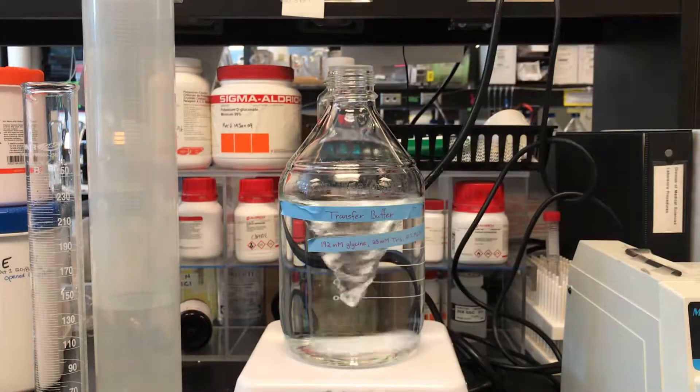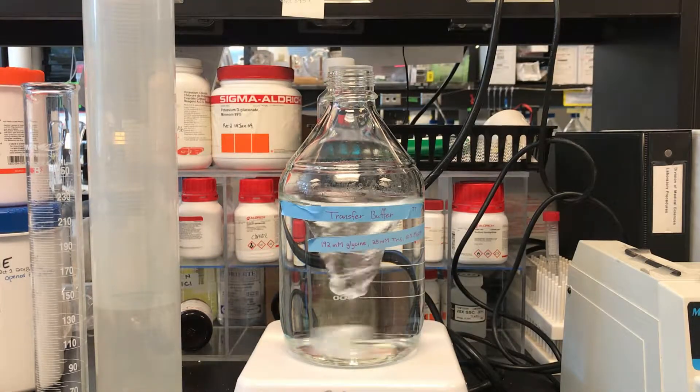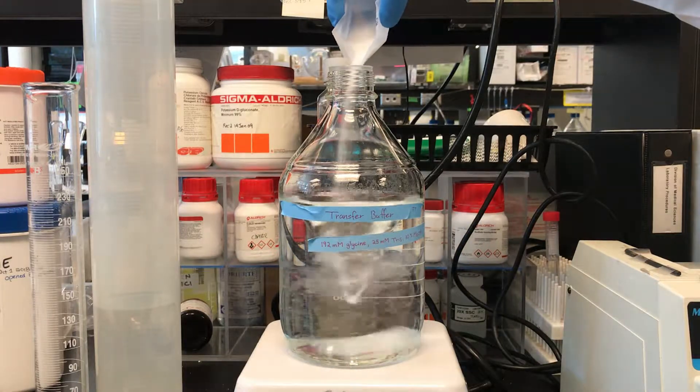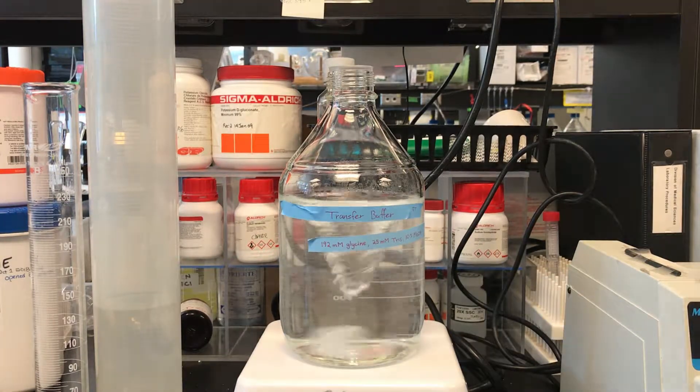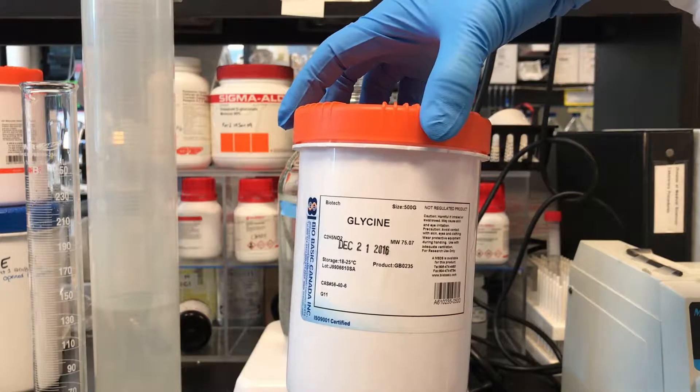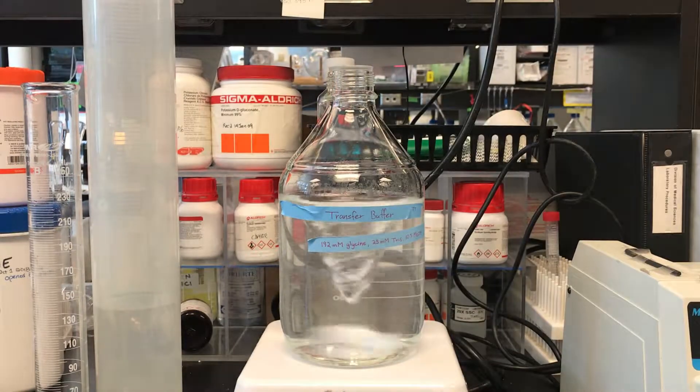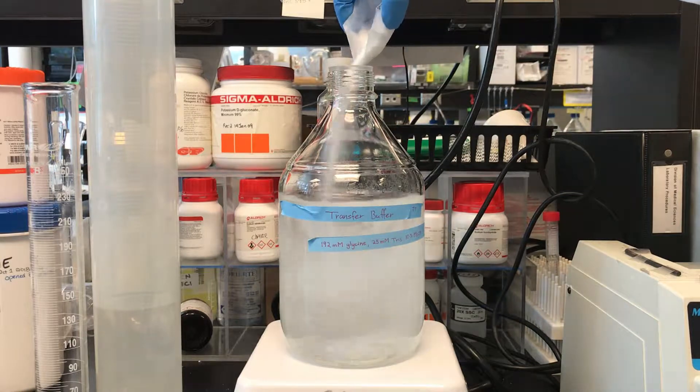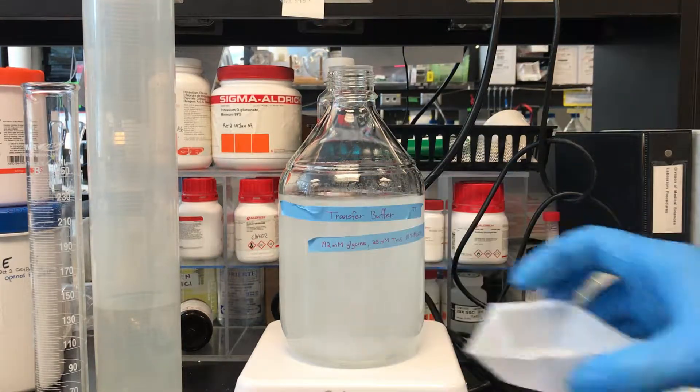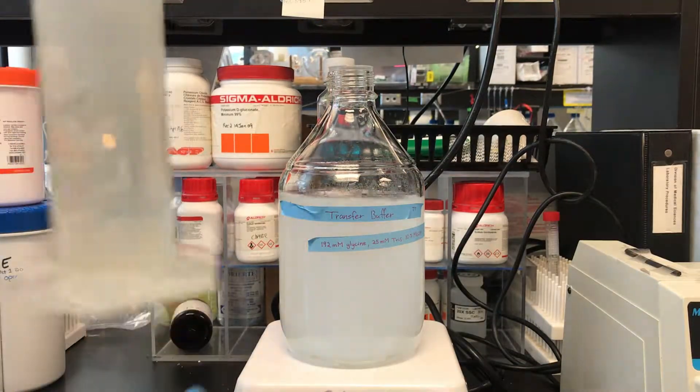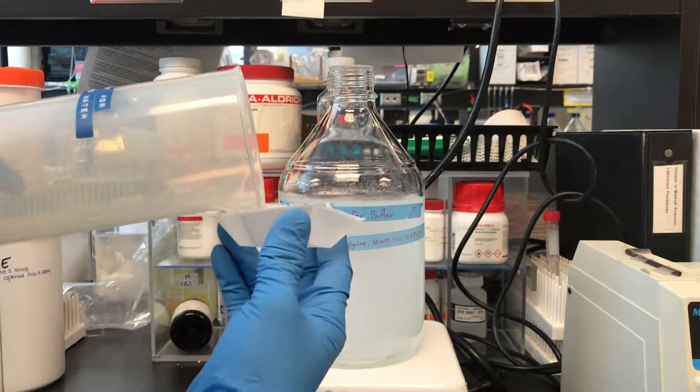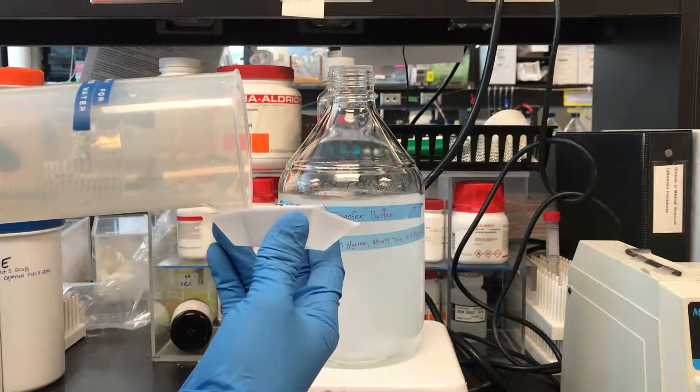Then add 6.06g of Tris base. Flush the weight boats with the distilled water until no remnants are present.